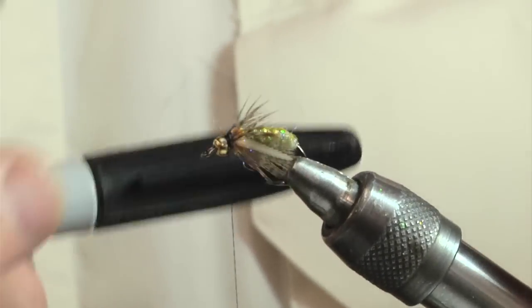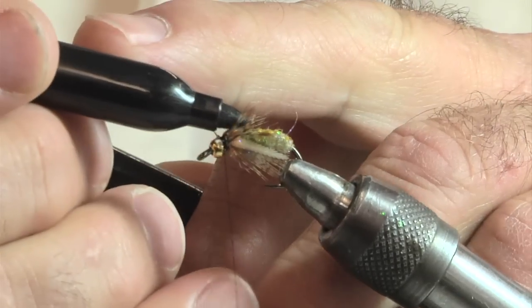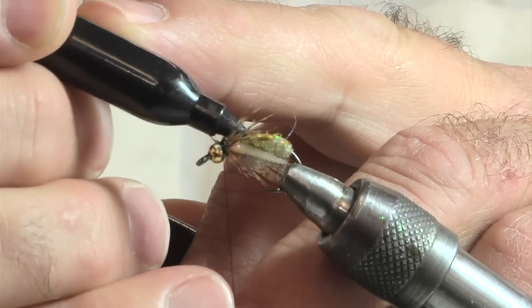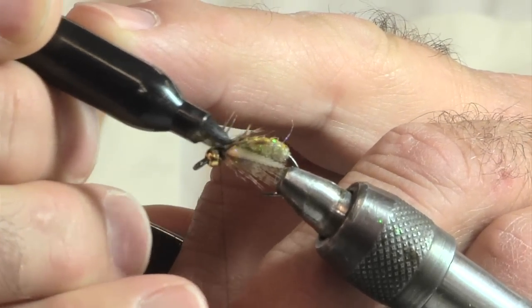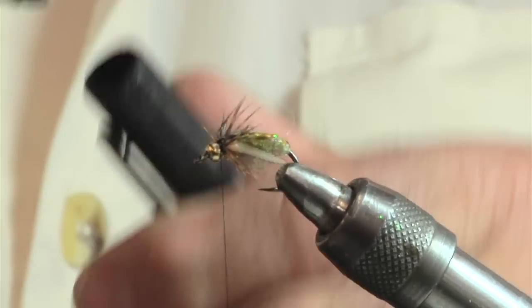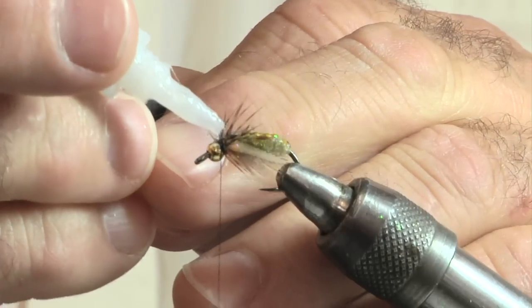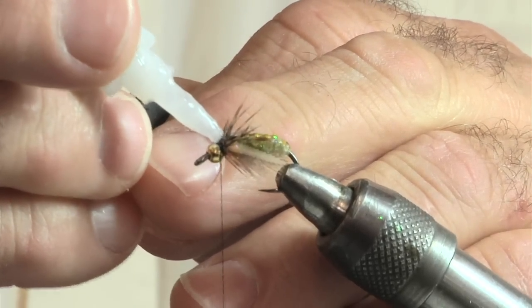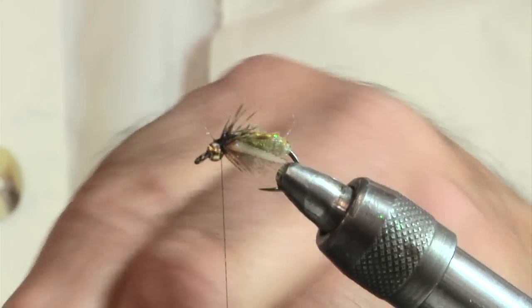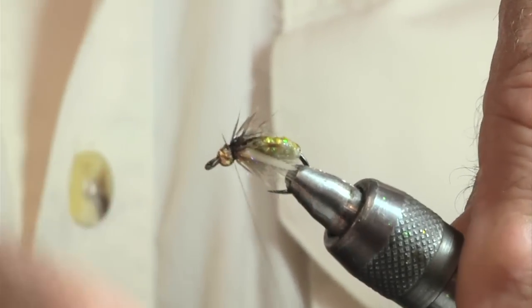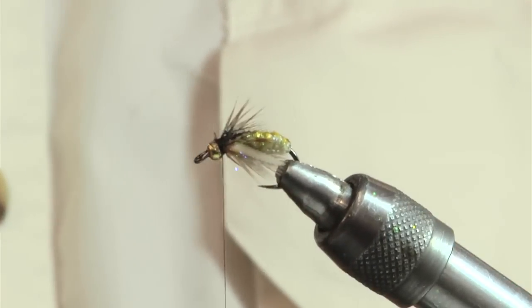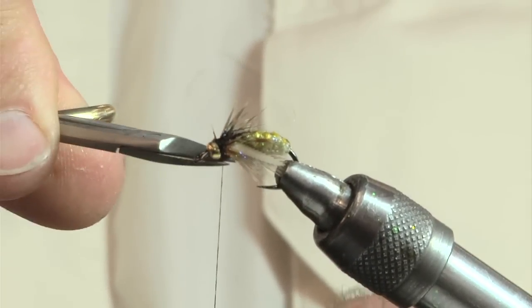And with a sharpie, there is a wing case that's in the back here and I want that darkened. And I put a little bit more super glue on it. And there is no need to whip finish it because that super glue is going to hold everything together.